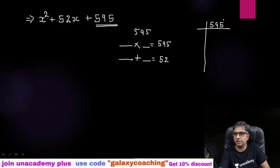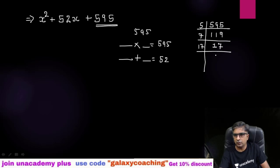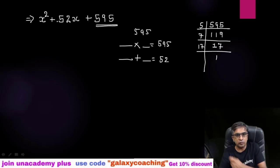595 — this is not divisible by 2 or 3 (digit sum is 19, and last digit is 5). It is divisible by 5: 595 ÷ 5 = 119. Now 119 is divisible by 7: 7 × 17 = 119. So the prime factors of 595 are 5 × 7 × 17.